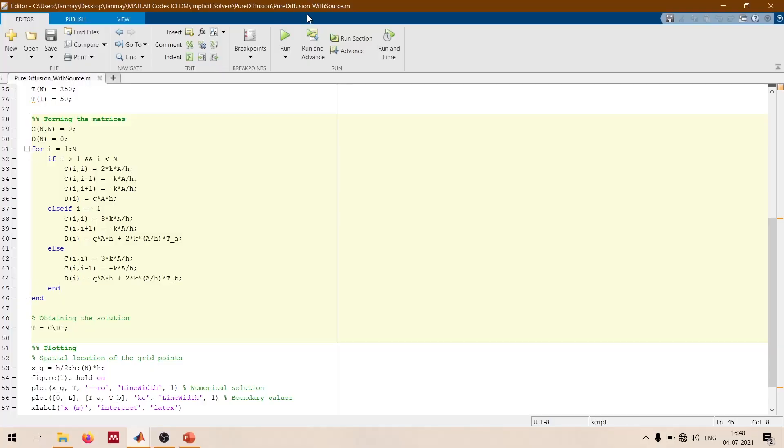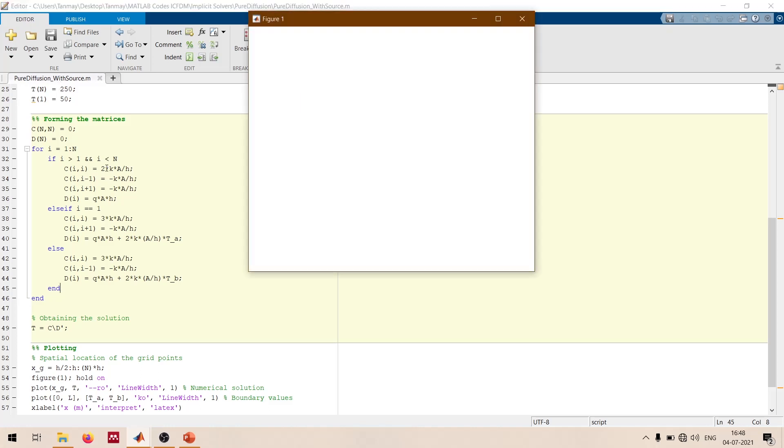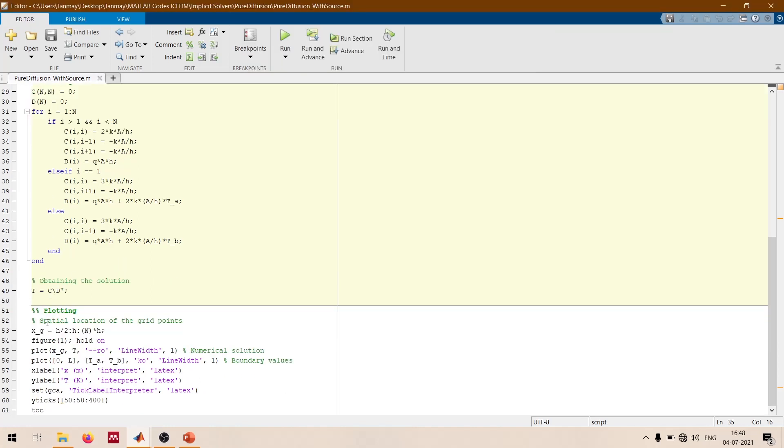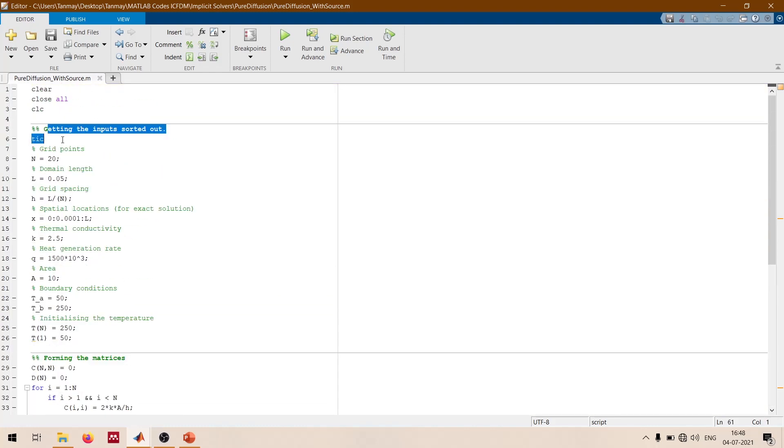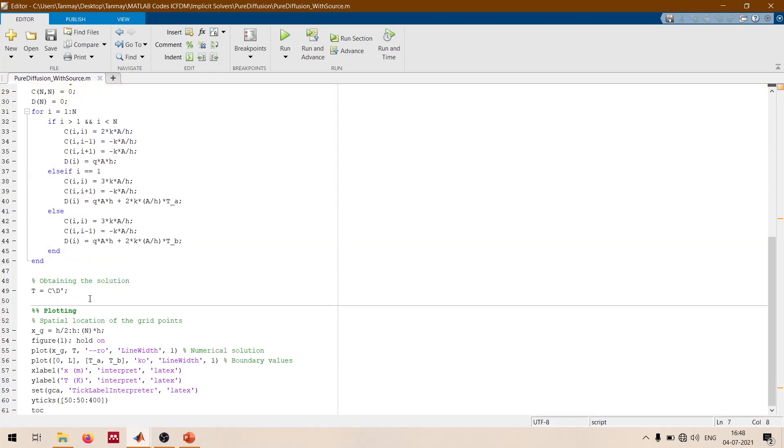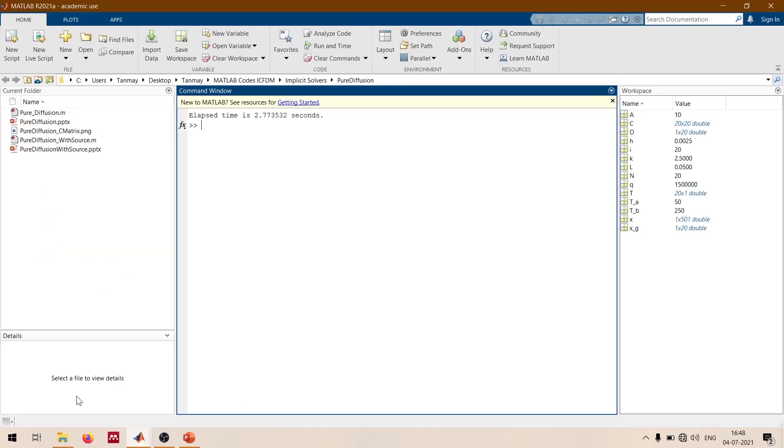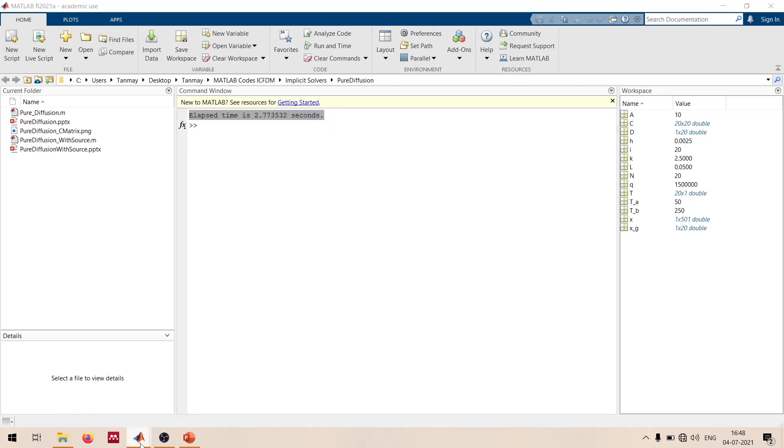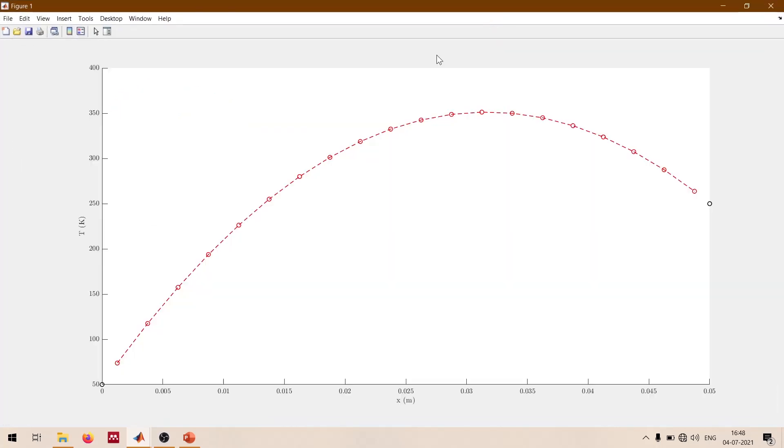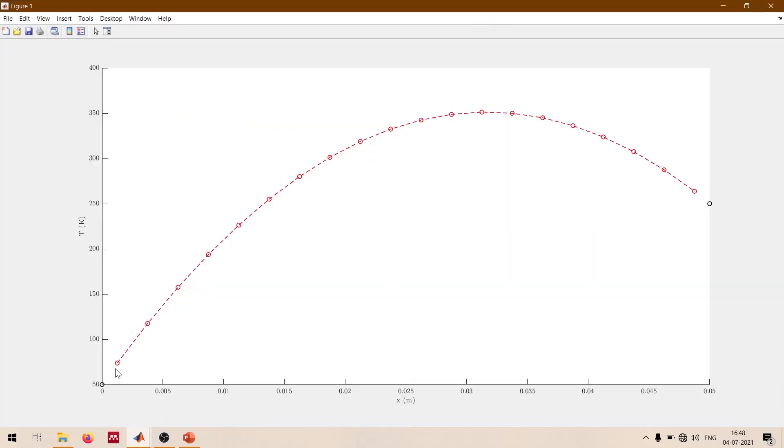Now if I run this code, we know that the boundary temperatures are 50 and 250 degrees. After the plotting, I have written this TOC here. So TIC at the first line, wherever the code actually starts and TOC towards the end. And in the command window, I can see that it takes around 2.7 seconds for the code to do all the processing. The figure shows me that on the extreme left, we have 50 degrees, that is this particular point here, and we have 250 here.